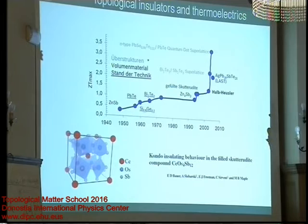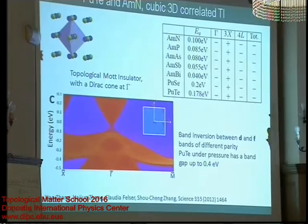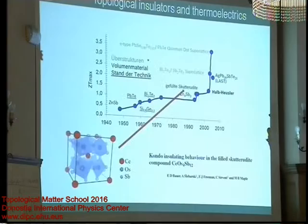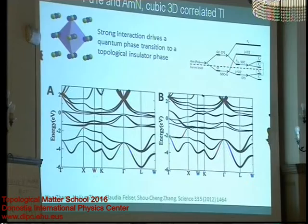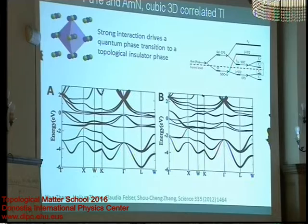Regarding the question about p-d inversion — I show here in the skutterudite that I think we have it; I have to check because I wrote the paper. But first, you can think nearly everything is s-p type. Here we have an example where one should still look, because this is simply the right symmetry. We have octahedral surrounding of the plutonium by telluride, so it must be a very common crystal field splitting. We must find more compounds showing interesting band inversion of d and f electrons.